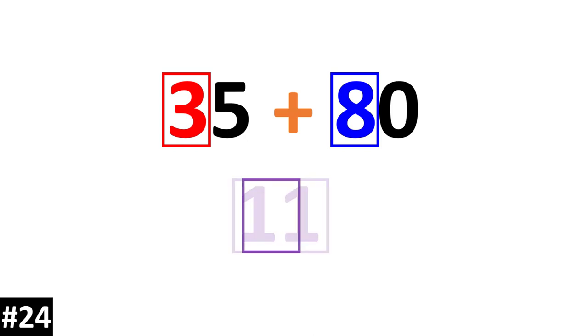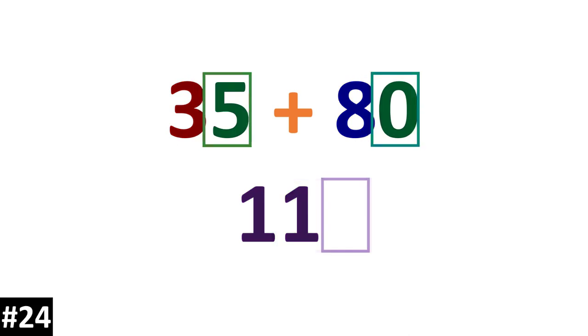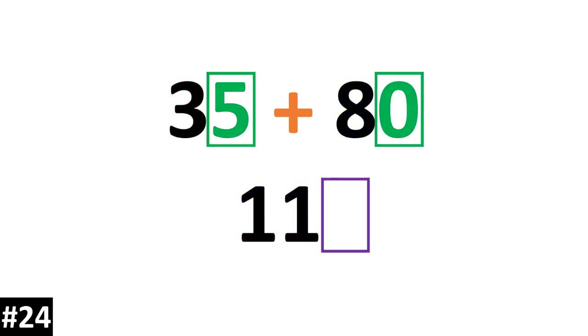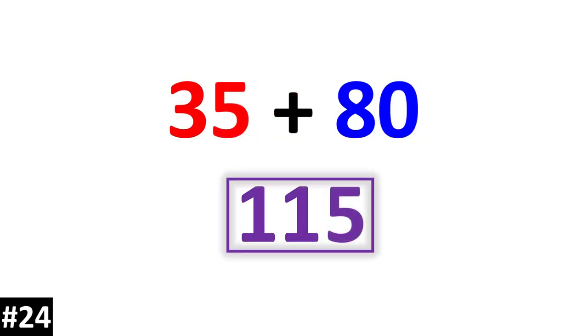35 plus 80. We add the 3 tens plus the 8 tens and we get 11 tens. Focus on the ones: 5. The answer is 115.